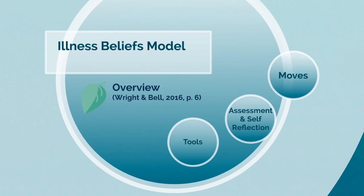The Illness Beliefs Model is centered around the concept of treating the family unit instead of simply focusing on the patient, and the model aims to help those suffering with illness, their family, and health care workers alike. Like most family nursing models and theories, it begins with assessing a patient and their unique family situation, and further examines beliefs overall, beliefs about family, beliefs about illness, beliefs about therapeutic change, and beliefs about clinicians.